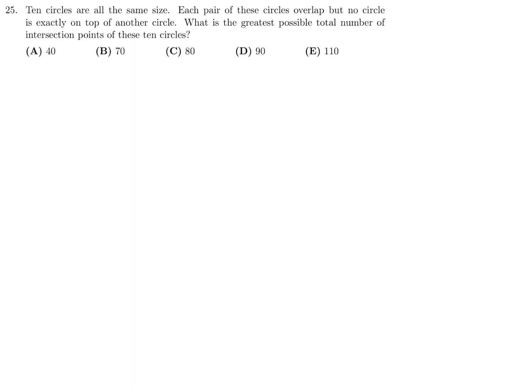10 circles all are the same size. Each pair of these circles overlap, but no circle is exactly on top of another circle. What is the greatest possible total number of intersection points of these 10 circles? You are definitely not going to draw 10 circles and try to count all the intersection points. The better strategy is to make a little list, number of circles, number of intersection points, and see if you get some sort of a pattern that you can extrapolate all the way till 10.